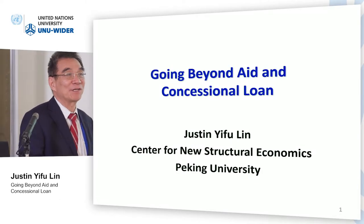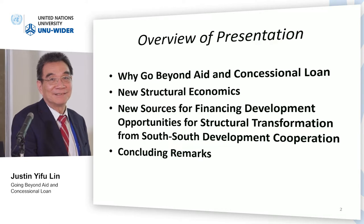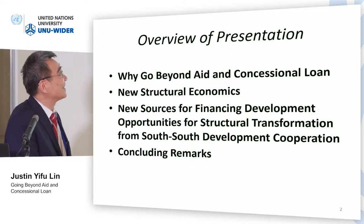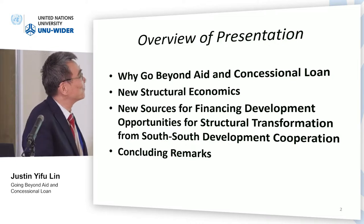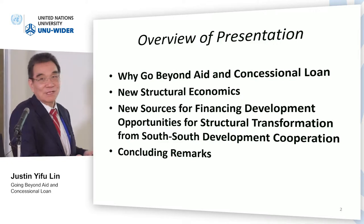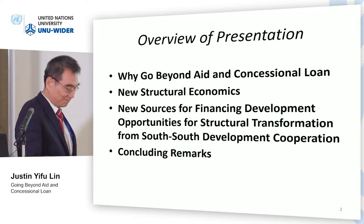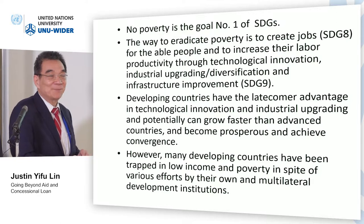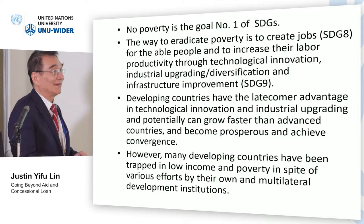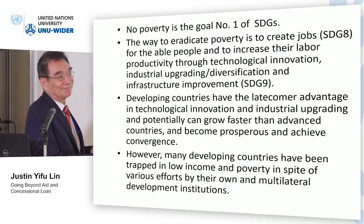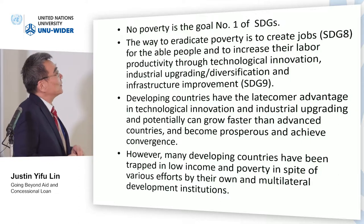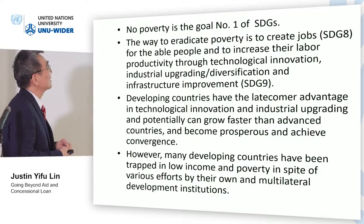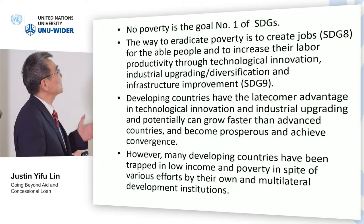Why we need to go beyond traditional aids and concessional loans — I'll provide a theoretical rationale for that and talk about new sources for financial development and structural transformation in the developing world. Ending poverty is the number one goal in the SDGs, and the way to achieve that is to create jobs — that's goal number eight — and to increase labor productivity through technological innovation, industrial upgrading, diversification, and infrastructure improvement.